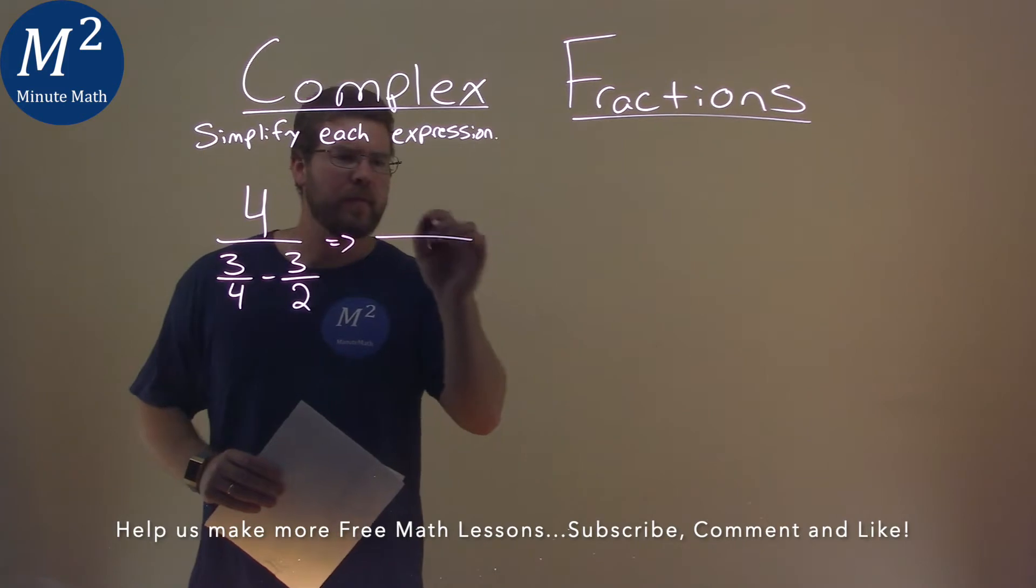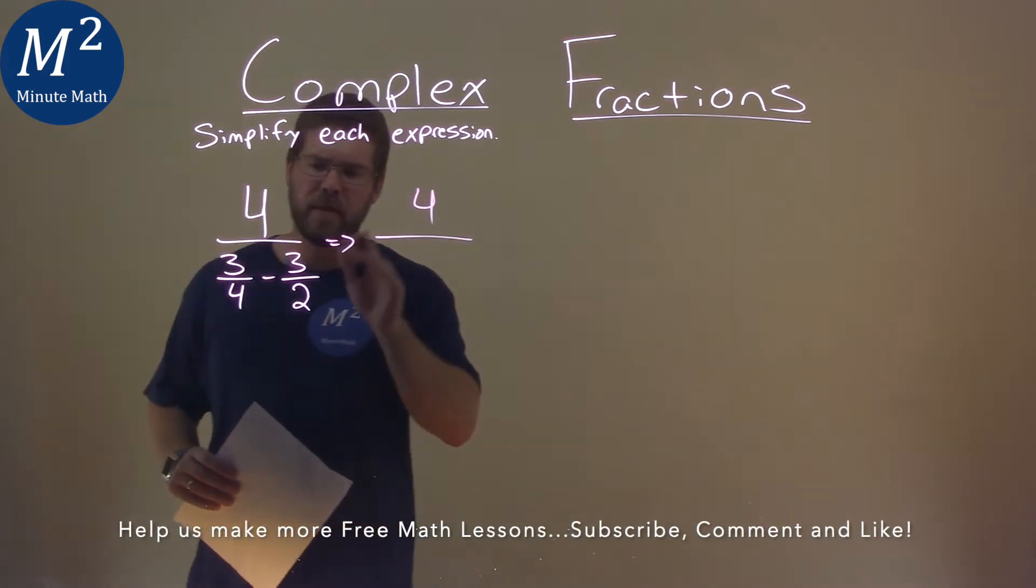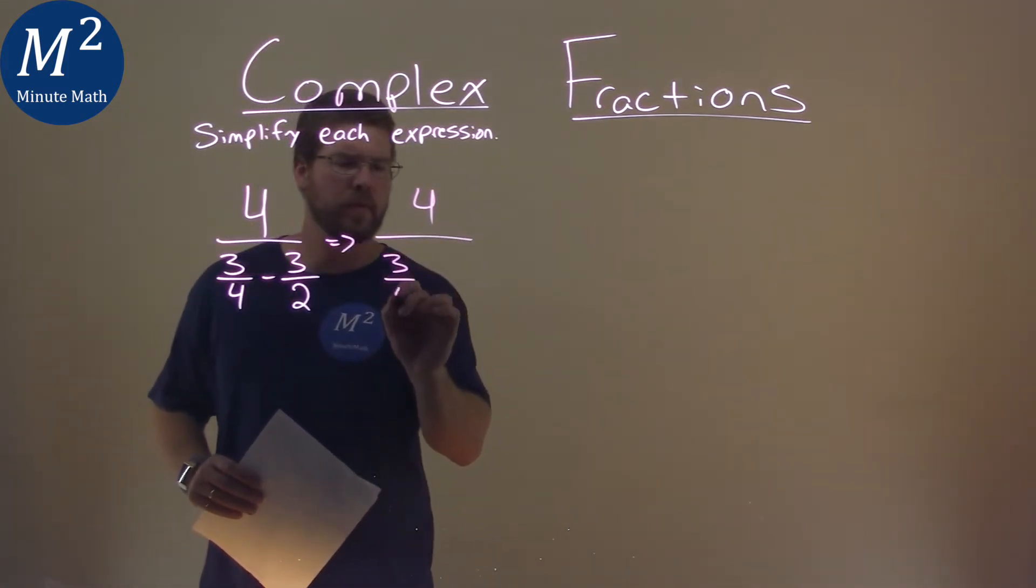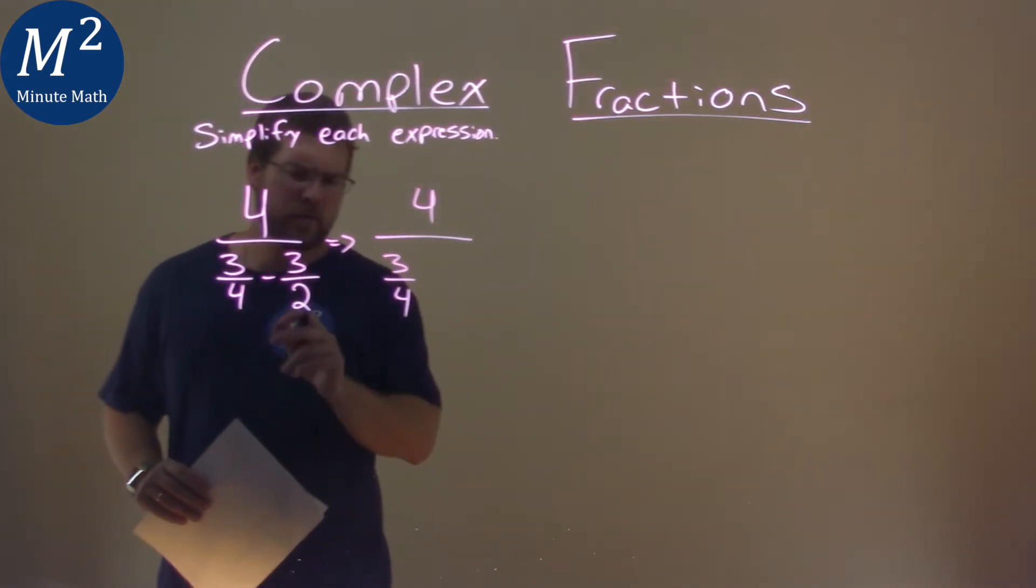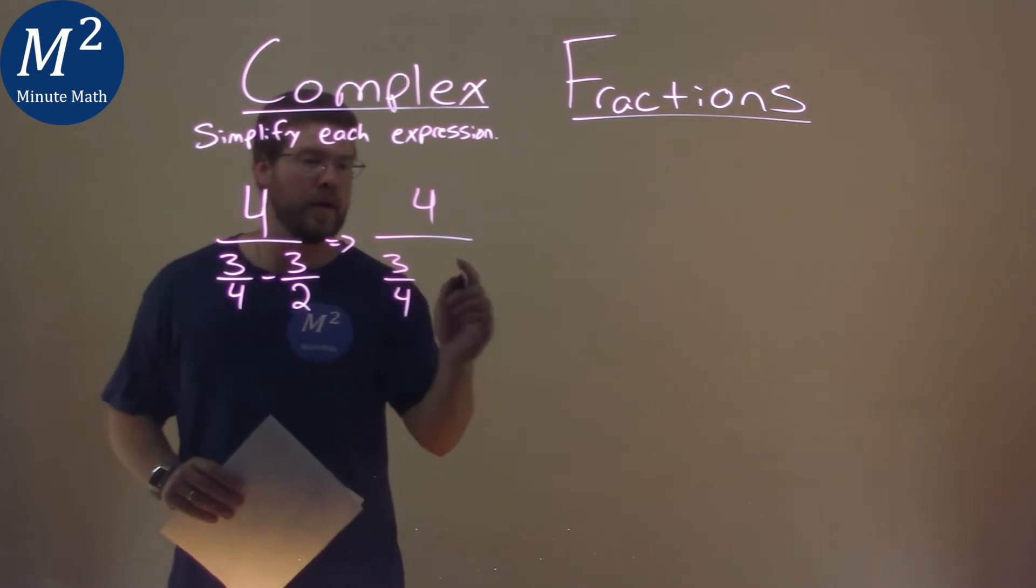Now, I'm going to rewrite this with a 4 in the numerator, and then the denominator of the 3 fourths. And I want to make the second fraction here have the same denominator as a 4. So to do that, this 2 means we multiply it by a 2.